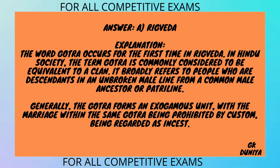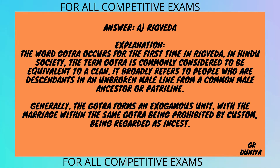Correct answer: A. Rigveda. Explanation: The word Gotra occurs for the first time in the Rigveda. In Hindu society, the term Gotra is commonly considered to be equivalent to a clan. It broadly refers to people who are descendants in an unbroken male line from a common male ancestor or patriline. Generally, the Gotra forms an exogamous unit, with marriage within the same Gotra being prohibited by custom, being regarded as incest.